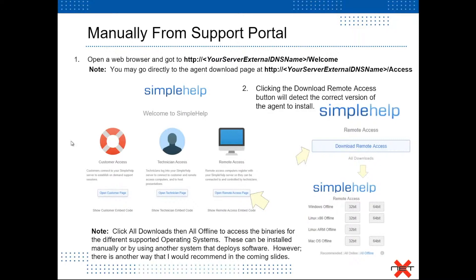From the welcome page, you simply click on the 'Open Remote Access' page, which leads you to a 'Download Remote Access' button. Clicking that button will sense the machine type you're running the install from, download the appropriate version, and allow you to install for the particular operating system you've accessed the page from. However, if you want to gather the binaries for deploying using a different method, you can click the 'All Downloads' link under the download button and select 'All Offline Binaries' to download the appropriate flavors.